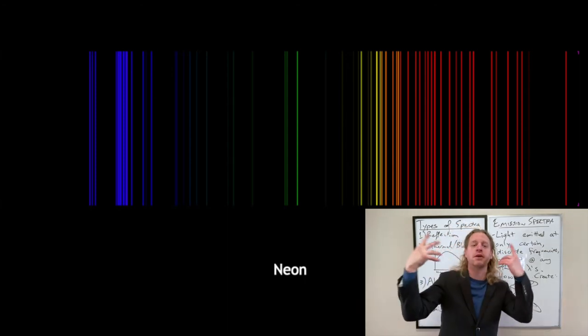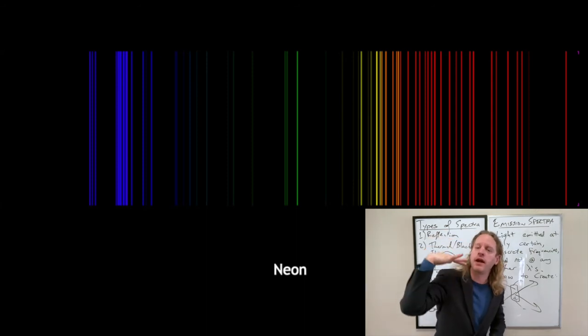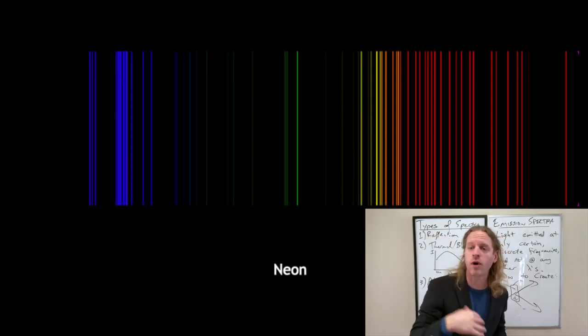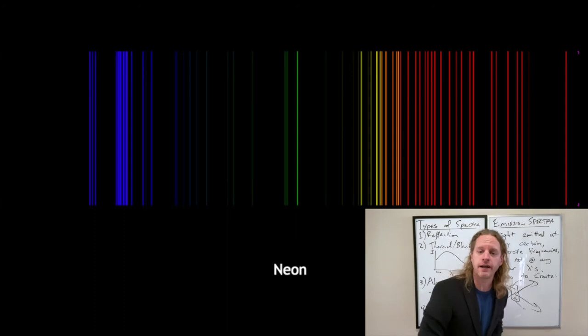But, so we see, as we get more and more, if you think about the periodic table now, as we're going down further in the periodic table, we see more and more of these different lines of specific energies of light we're emitting.